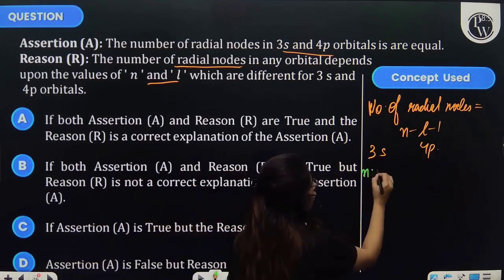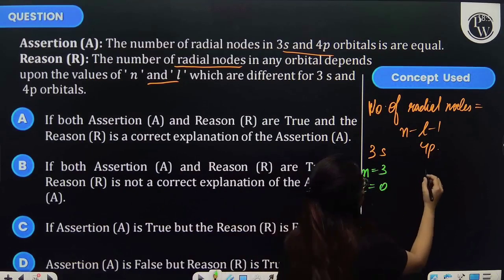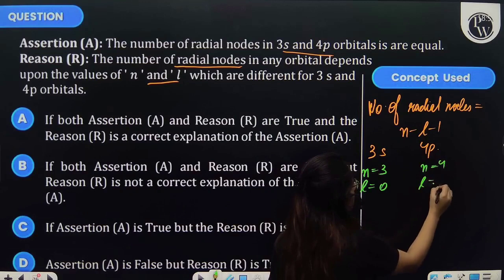For 3s orbital, the value of n is 3 and l is 0. And then for 4p orbital, the value of n is 4 and l is 1.